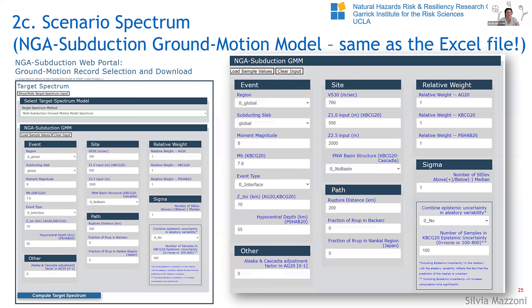For the scenario spectrum, this is where you define input for your ground motion model. I've broken it up into event data, site data, path data, and other parameters — including the AG-20 Alaska and Cascadia adjustment. You specify the relative weight of the different ground motion models. I've implemented three of them. You can put in 0.33, 0.33, 0.34, or just assign 1, 1, 1 and I divide by the sum of all the weights. I did the same thing with NGA West 2.